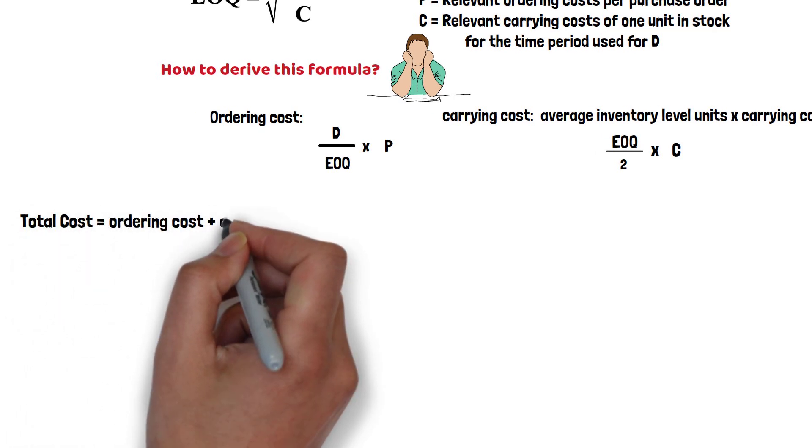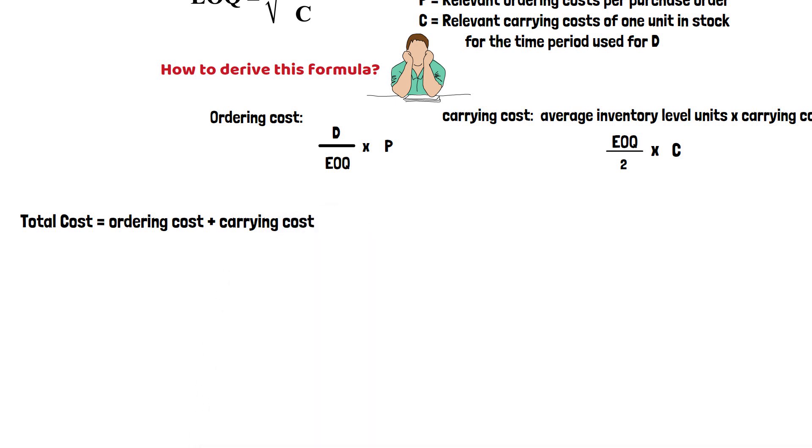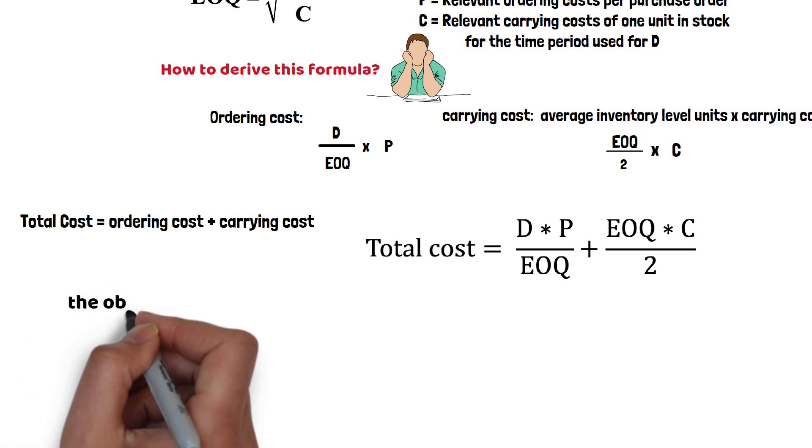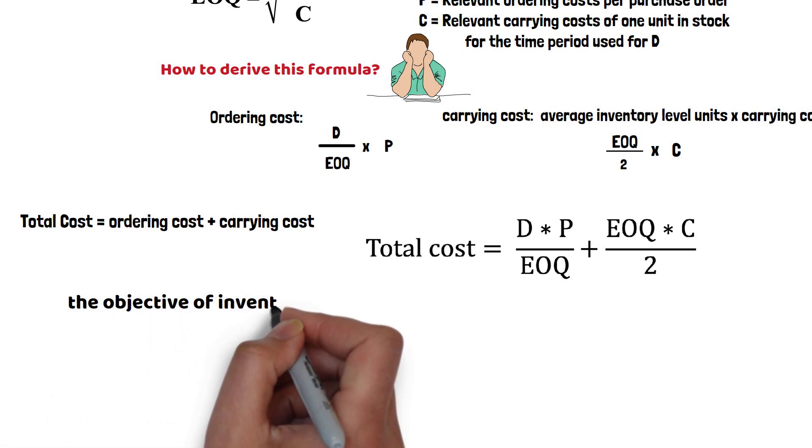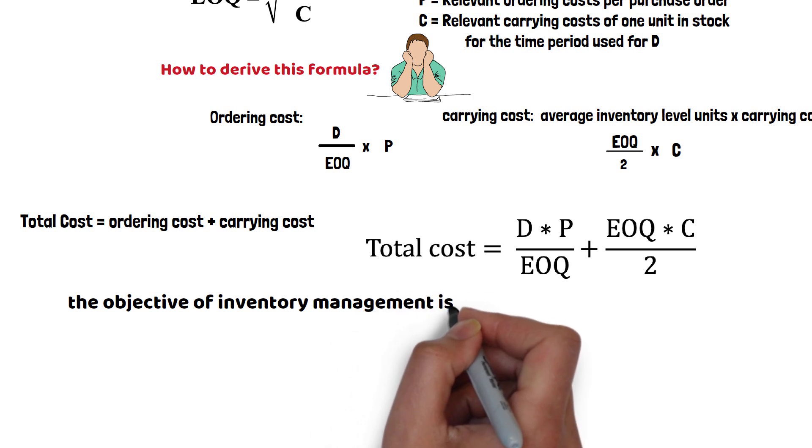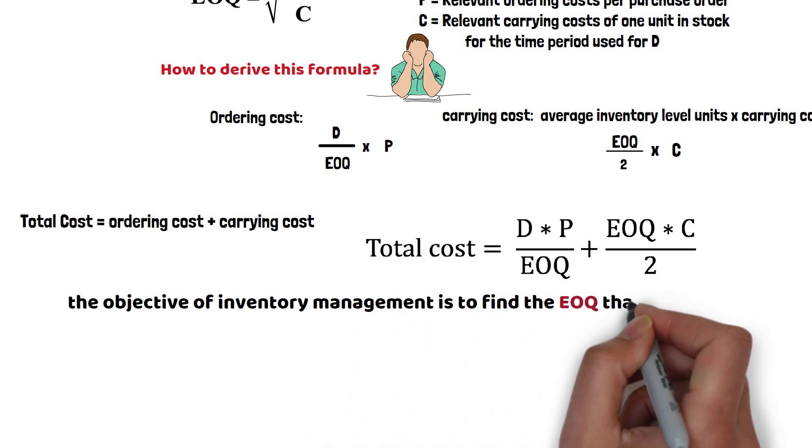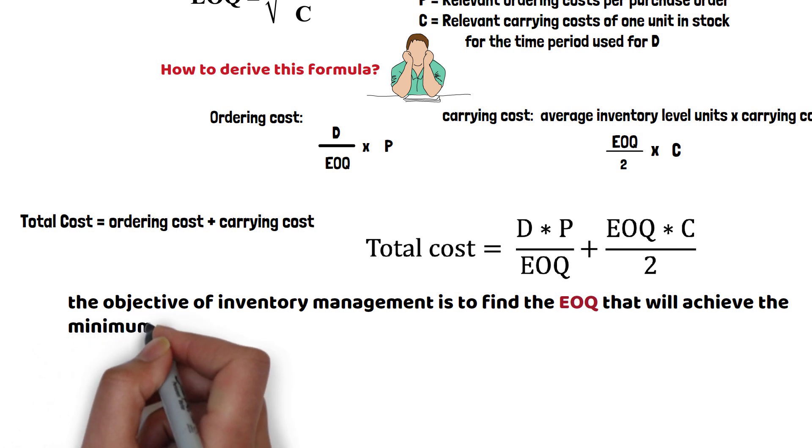Therefore, total cost equals ordering cost plus carrying cost, which equals D times P divided by EOQ plus EOQ times C divided by 2. The objective of inventory management is to find the EOQ that will achieve the minimum cost.